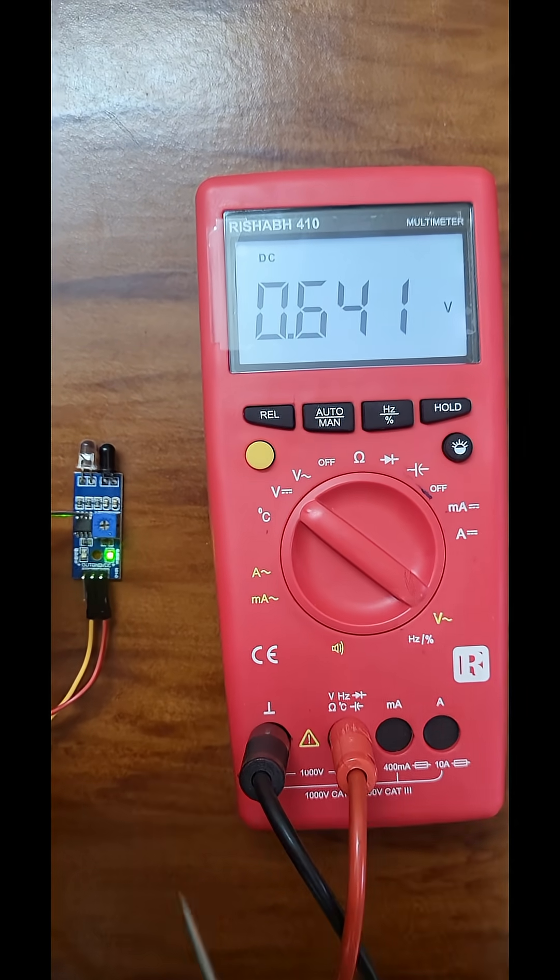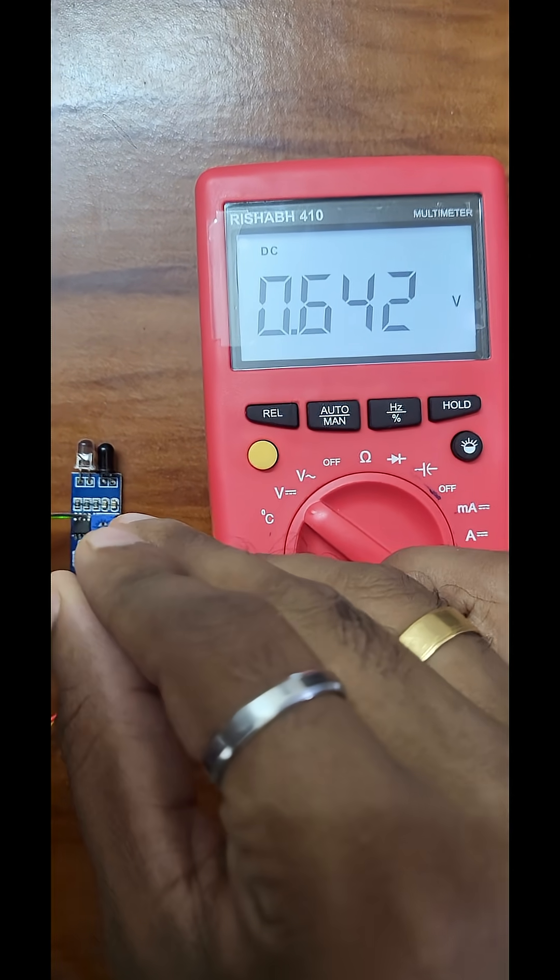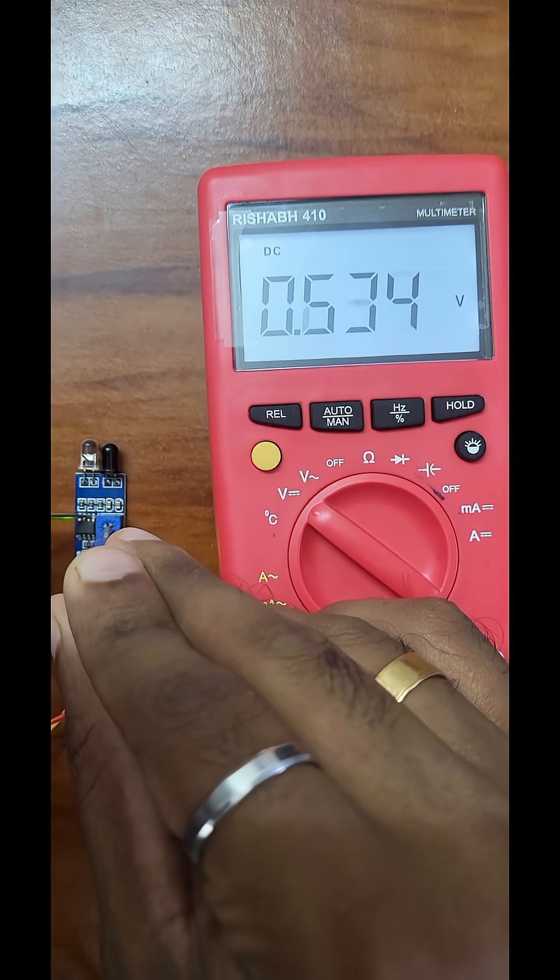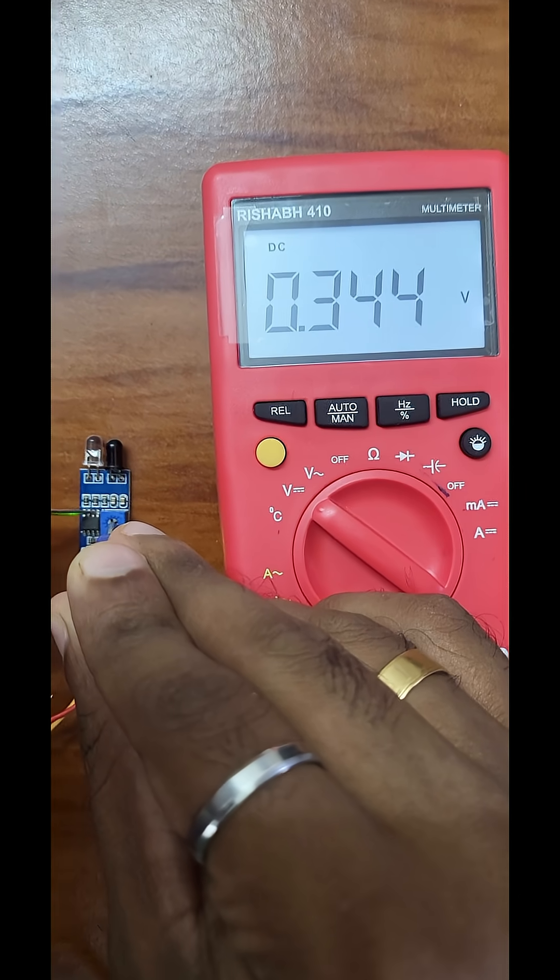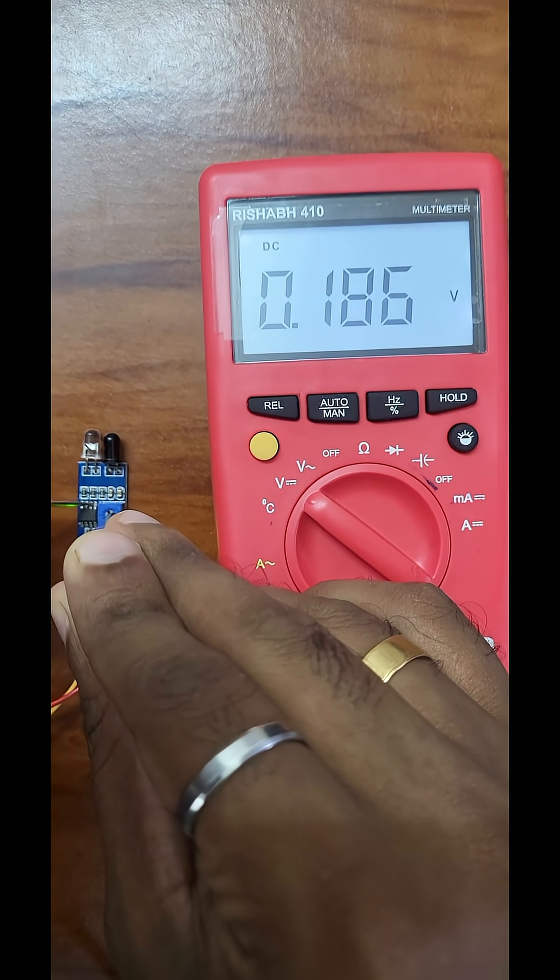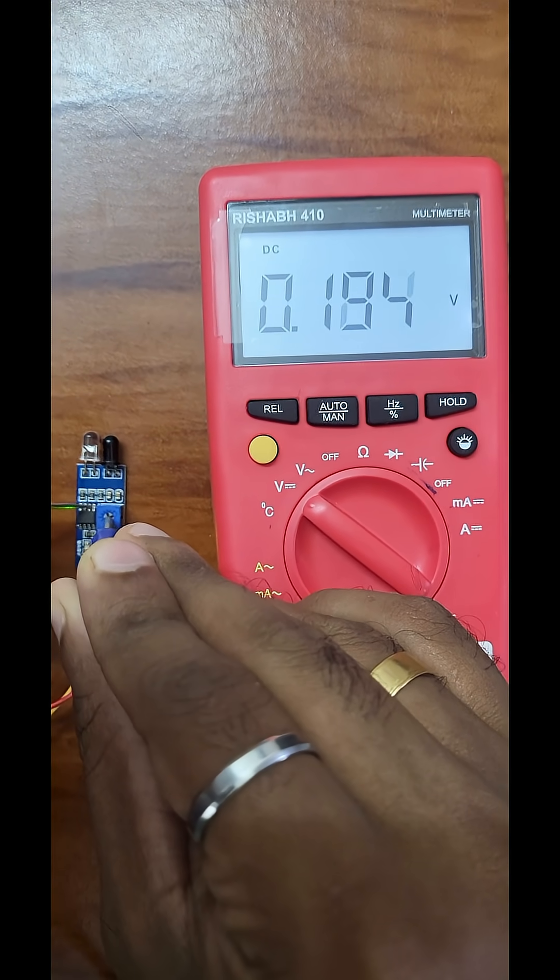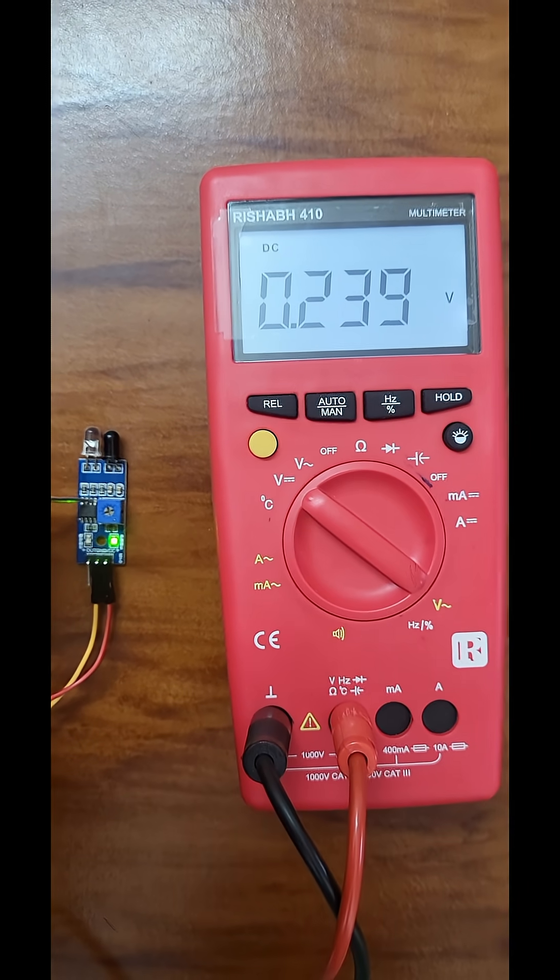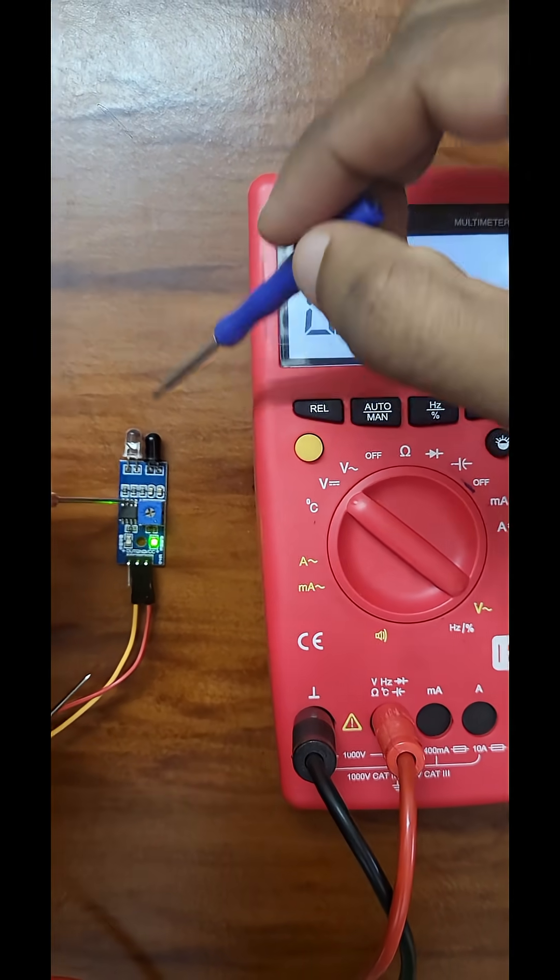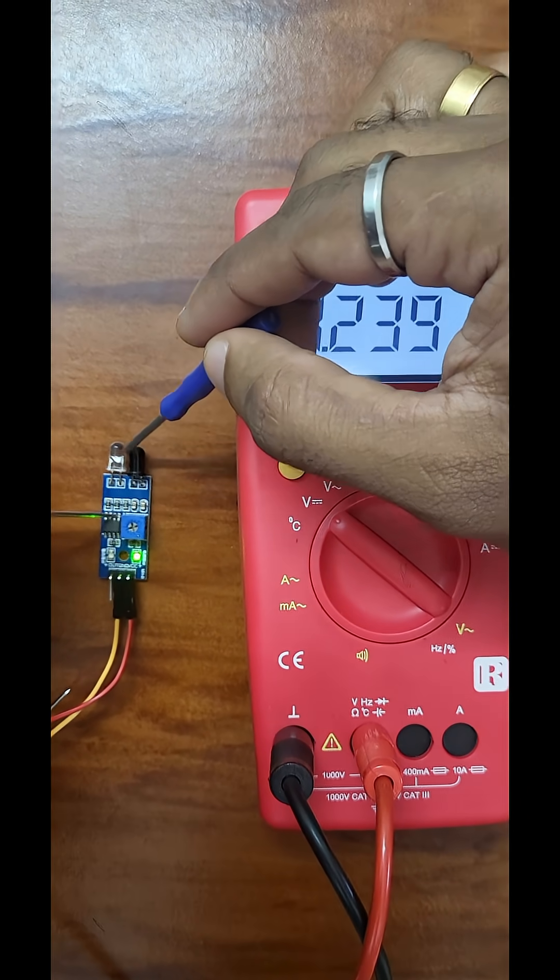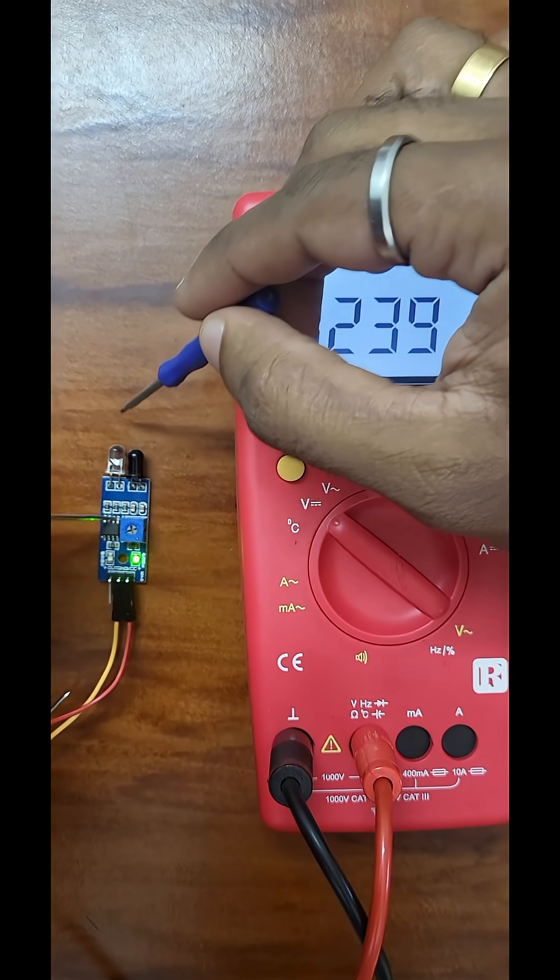Now, I'll show you what happens when we reduce the reference voltage using the potentiometer. By rotating the potentiometer, we can change the reference voltage. If we decrease the reference voltage, the sensor becomes less sensitive. Now, it needs a stronger reflection, lower photodiode voltage, to go below the reference and trigger detection.